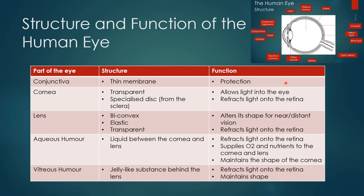The vitreous humor fills the whole space behind the lens. It is a jelly-like substance. It also refracts light onto the retina and maintains the shape of the eye because it fills that whole space and pushes outwards. All of these — the cornea, aqueous humor, lens, and vitreous humor — refract light onto the retina because they are all in the direct path of light on its way to the retina.